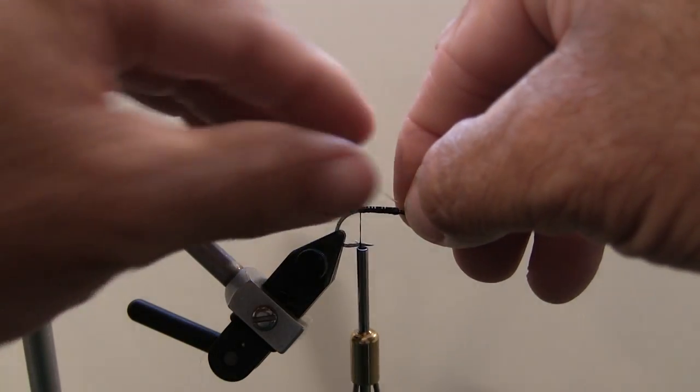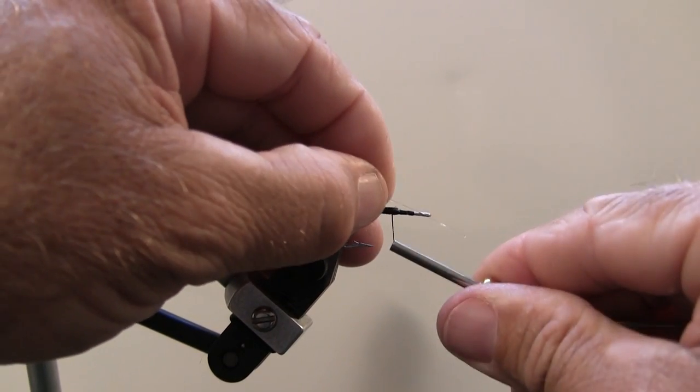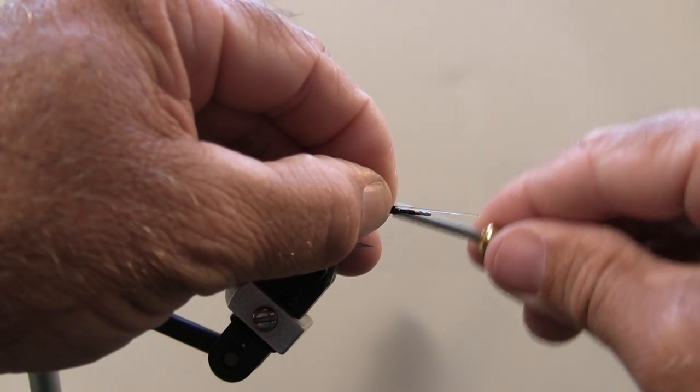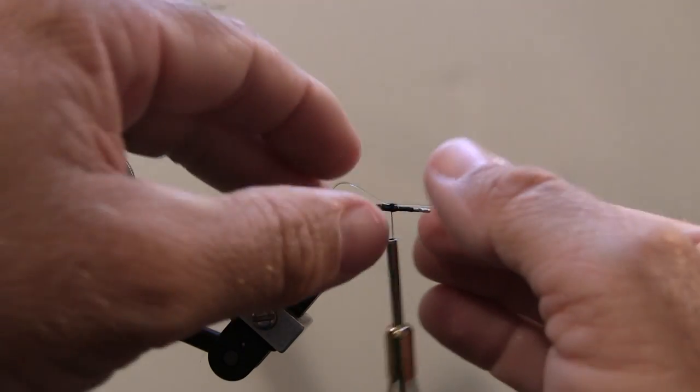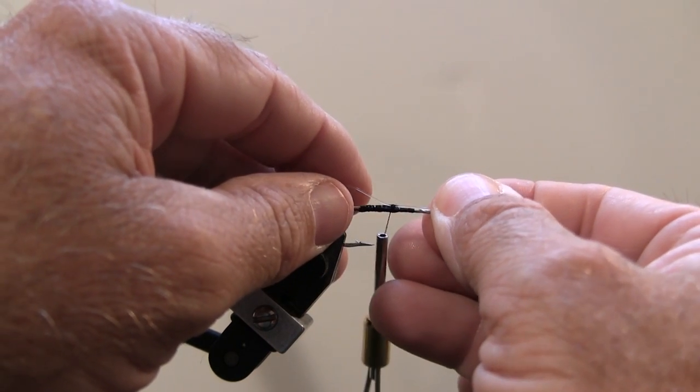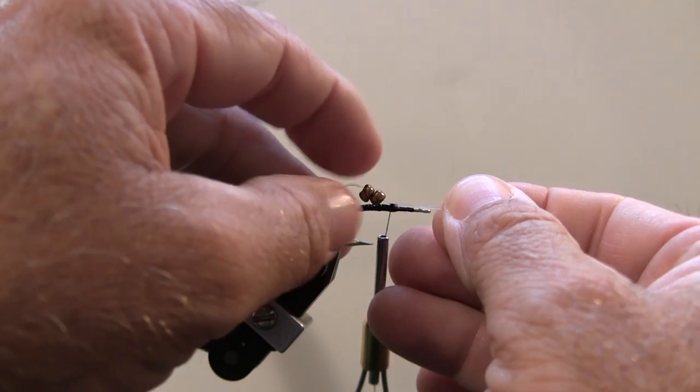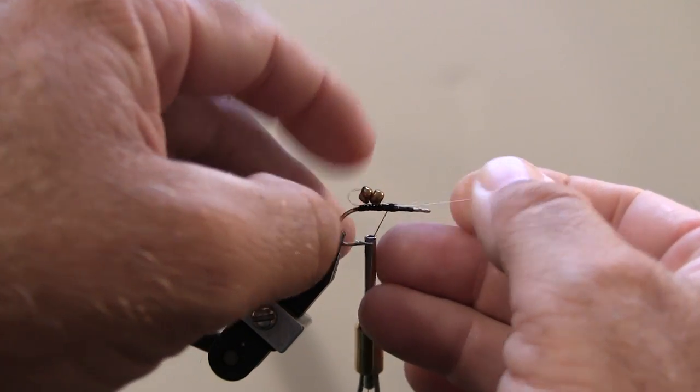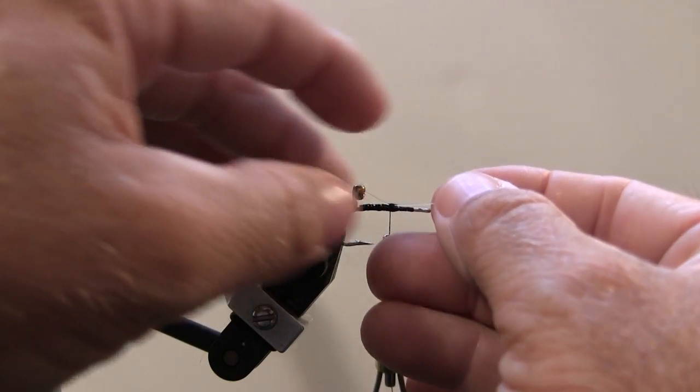Then I'm going to bend it back down towards the eye of the hook. Bring my thread forward. I'm going to give it a couple loose wraps so that I can adjust what size this is. This was a little too big. I'm going to pull it down just so there's enough room that these beads can slide back and forth. So they're going to slide back and forth and clank into each other like that.